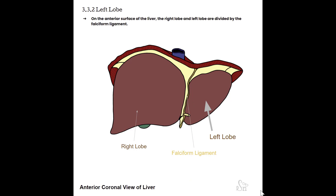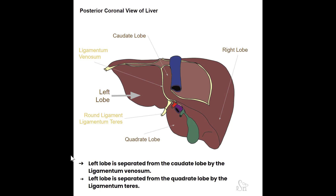The left lobe varies greatly from person to person in size — some have very large left lobes extending to the spleen, some have average ones making the pancreas and midline structures easy to see, and some have tiny to non-existent lobes. The left lobe is still recognizable as divided from the right lobe by the falciform ligament on the anterior surface. From the posterior view, the ligamentum venosum separates the caudate lobe from the left lobe, and the ligamentum teres separates the left lobe from the quadrate lobe.